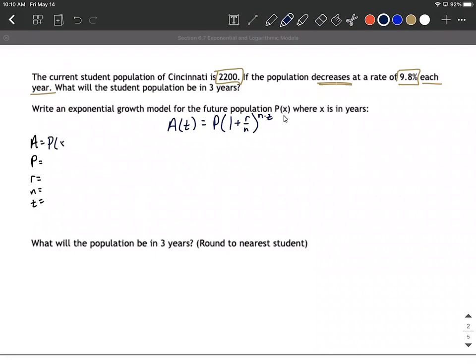So P of X will represent our future amount here. Next up, let's fill in the information that we just picked out from the words. The current population, what we start with is 2200. So that's going to go in for P.